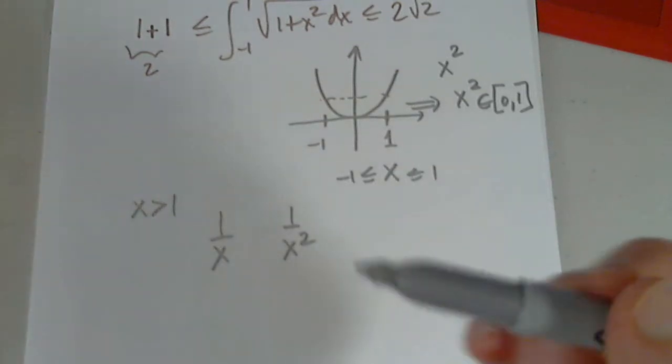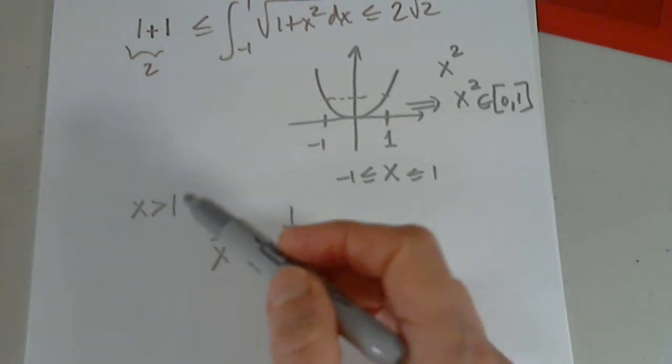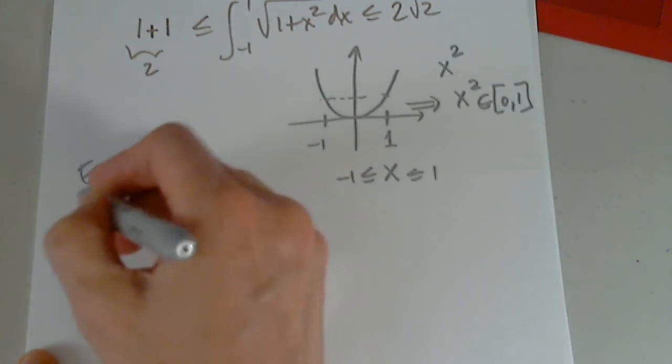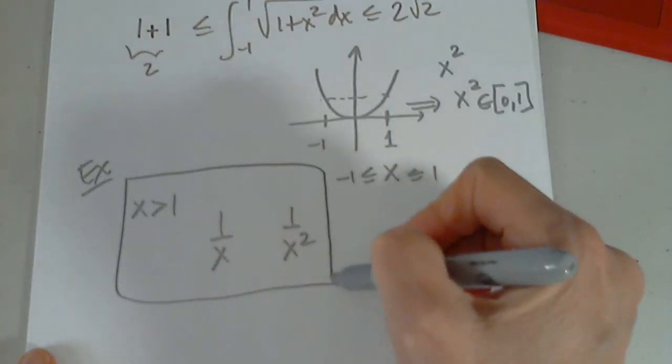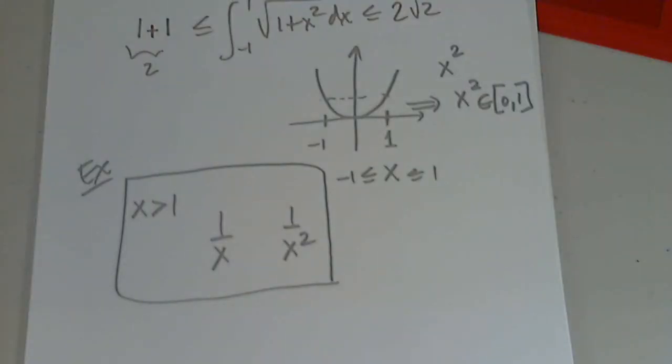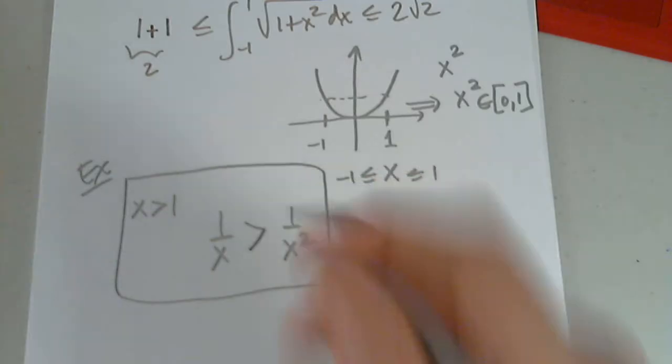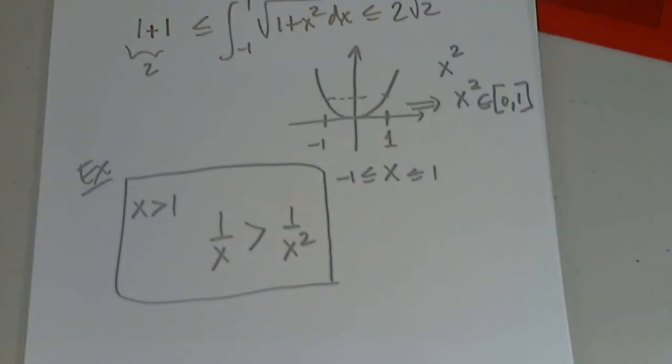Yes, it's working. So if x is a number greater than 1, just an example, which of these two will be bigger? 1 over x squared or 1 over x? Of course, 1 over x. Because the higher the denominator, the smaller the fraction.